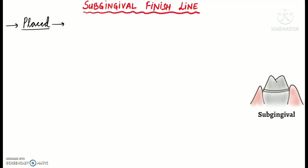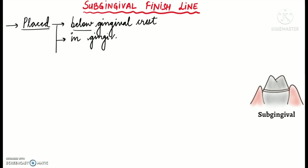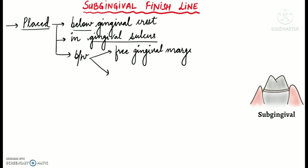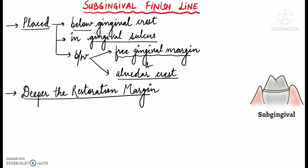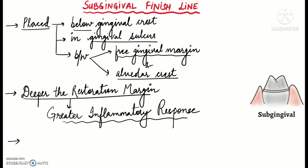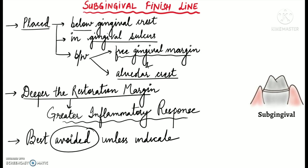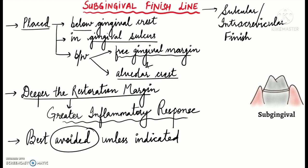A sub-gingival finish line is basically placed below the gingival crest in the gingival sulcus, hence the name sub-gingival. It is placed somewhere between the free gingival margin and alveolar crest. The deeper the restoration margin is placed in the gingival sulcus, the greater is the inflammatory response. Therefore sub-gingival finish lines are best avoided unless absolutely indicated. The sub-gingival finish line is also called a circular finish line or intracrevicular finish line.